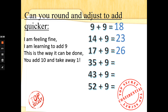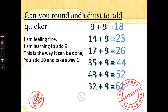35 add 9: add 10 and take away 1 — 35 add 10 is 45, take away 1 is 44. Well done! 43 add 9: add 10 and take away 1 — 43 add 10 is 53, take away 1 is 52. 52 add 9: 52 add 10 is 62, take away 1 is 61. Much faster!